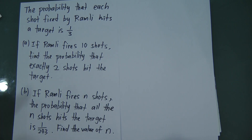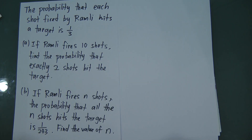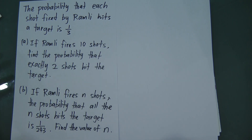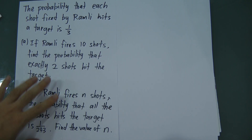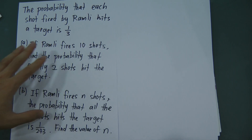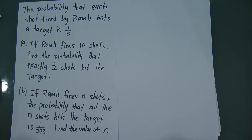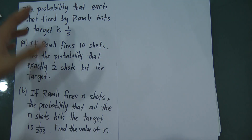For SPM students, when they see a probability question they are often confused about whether it belongs to the probability chapter, the probability distribution chapter, or the permutation and combination chapter. Most questions from the probability chapter and probability distribution chapter can be solved using either the tree diagram method or the formula.